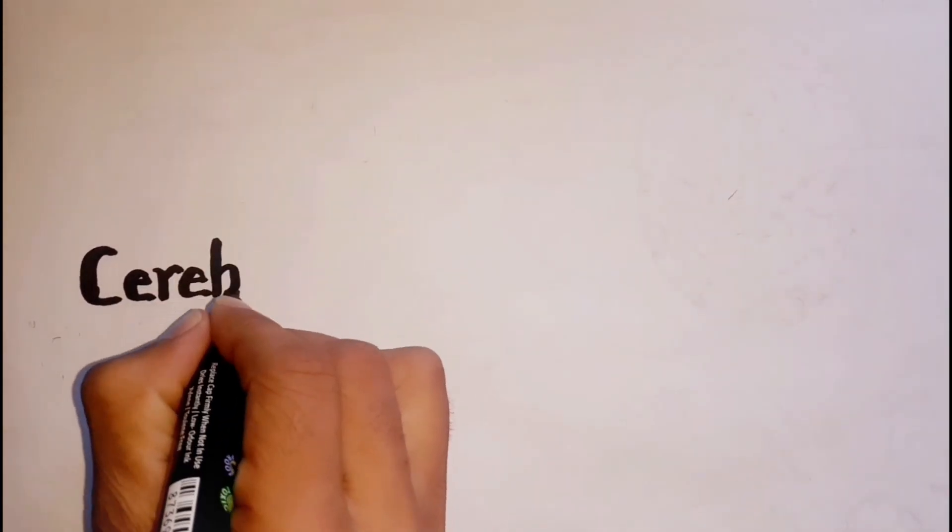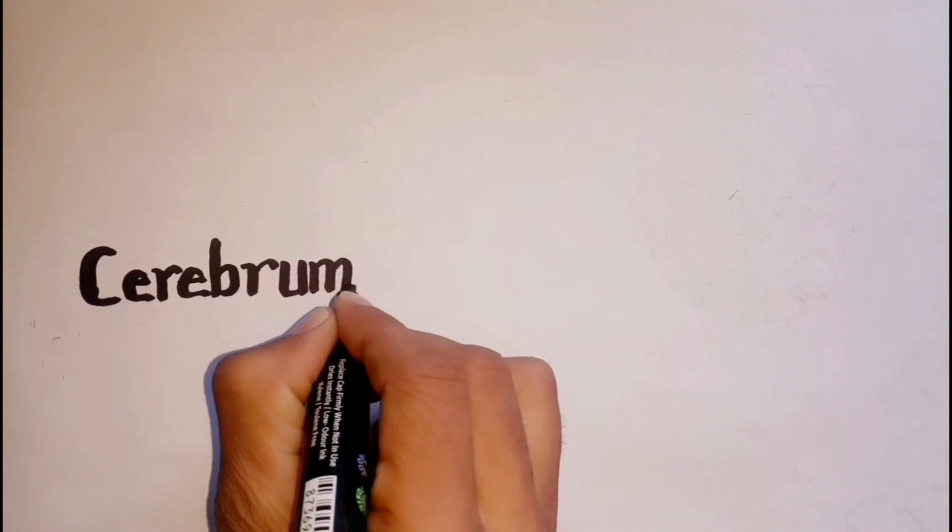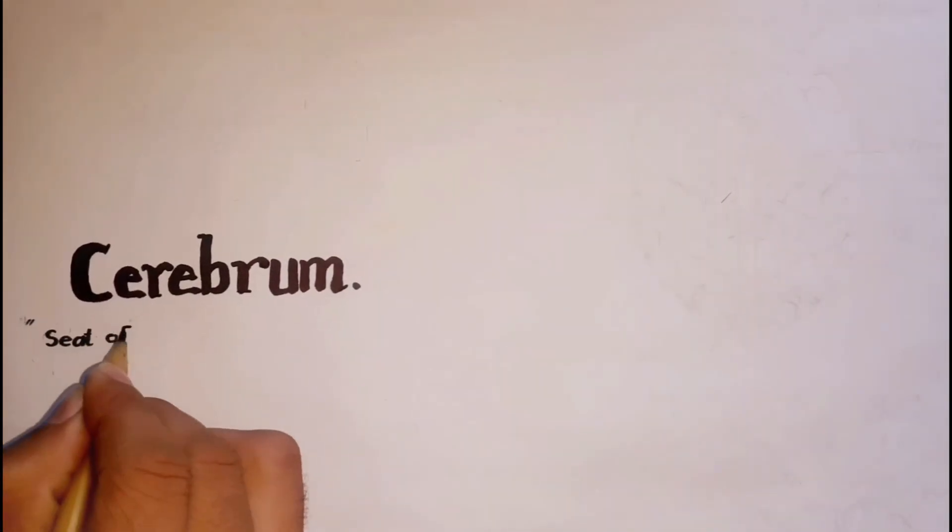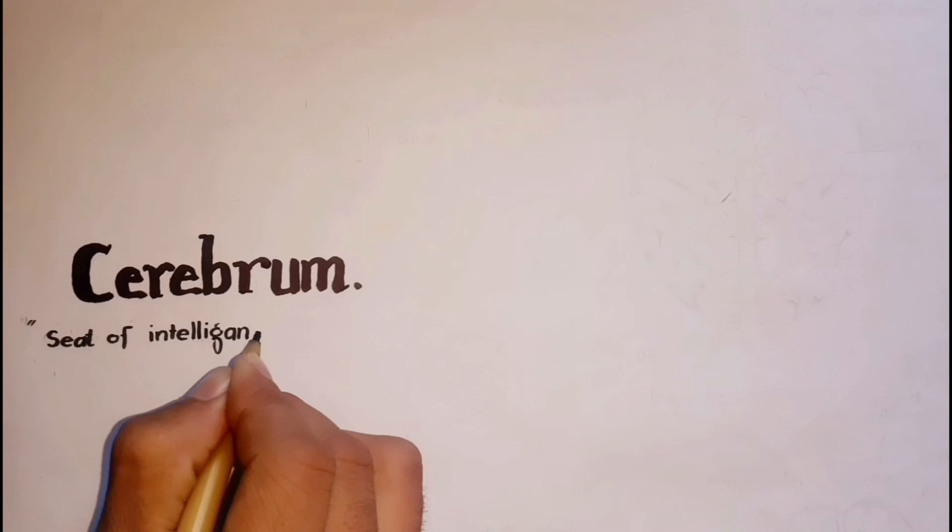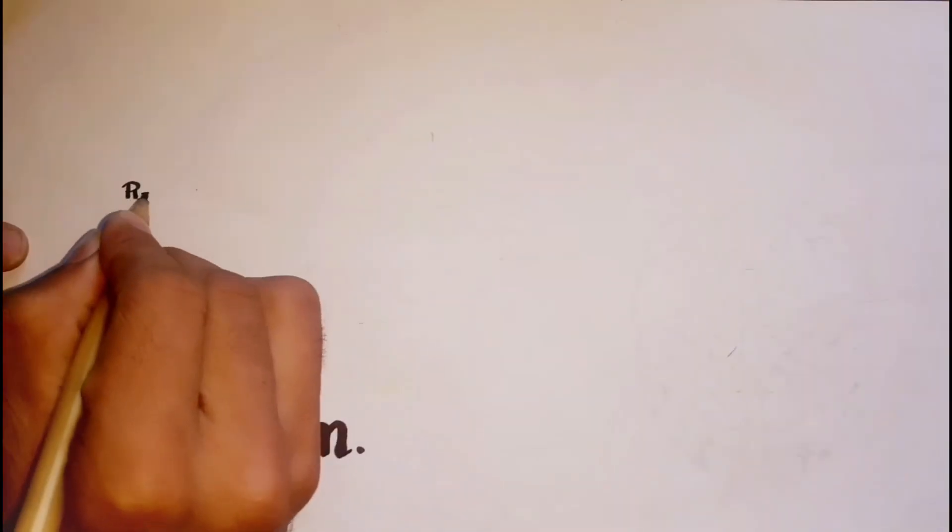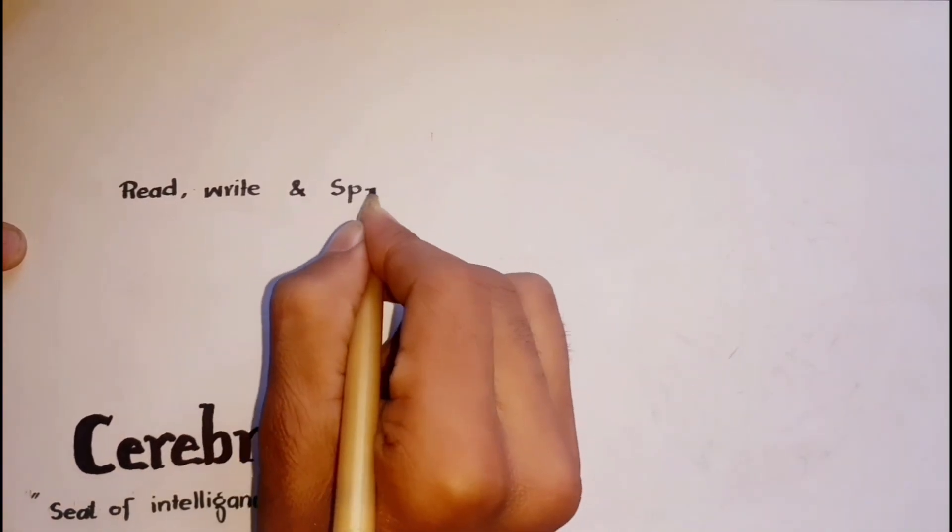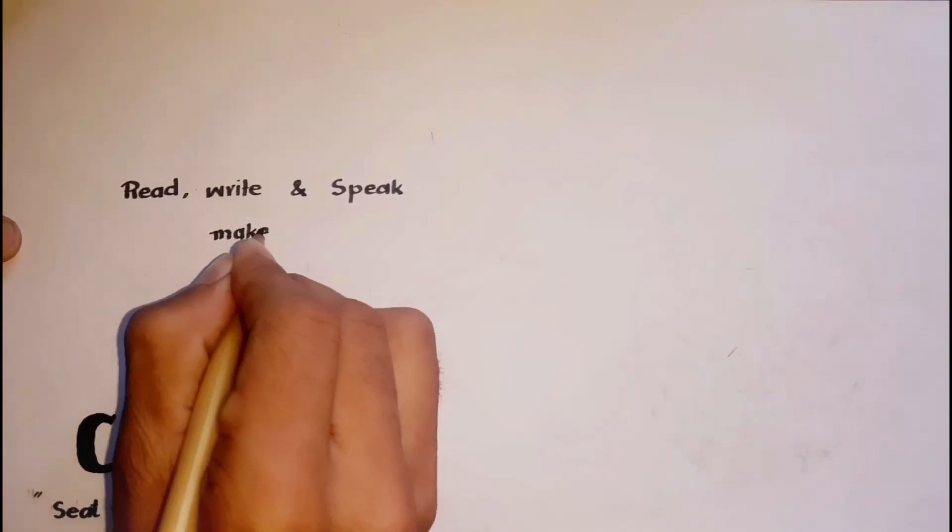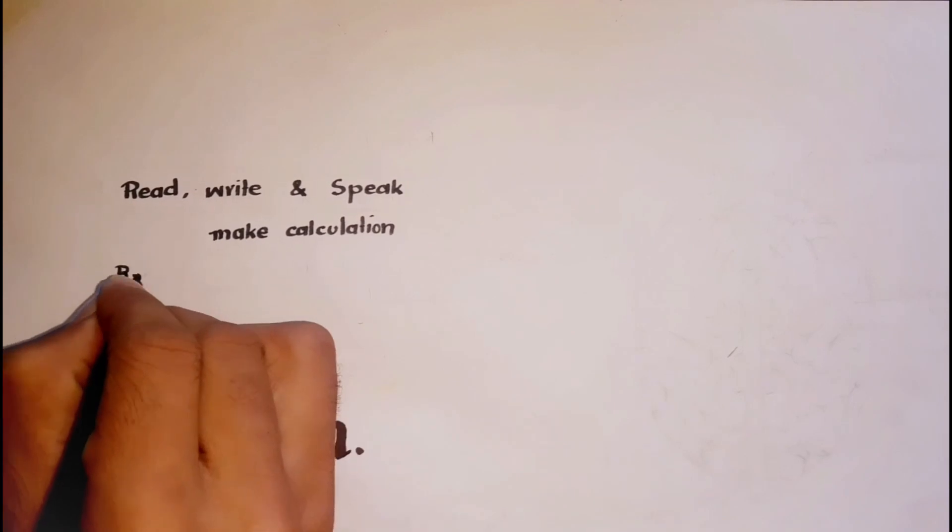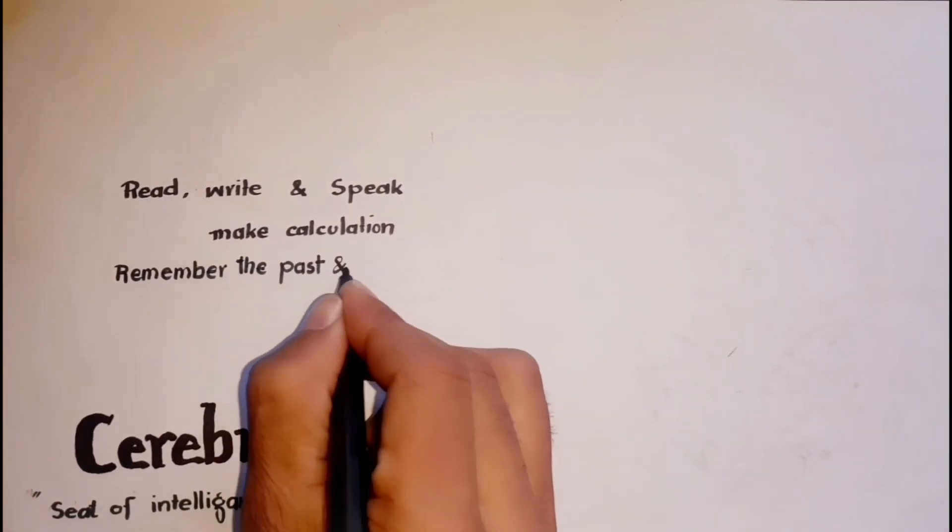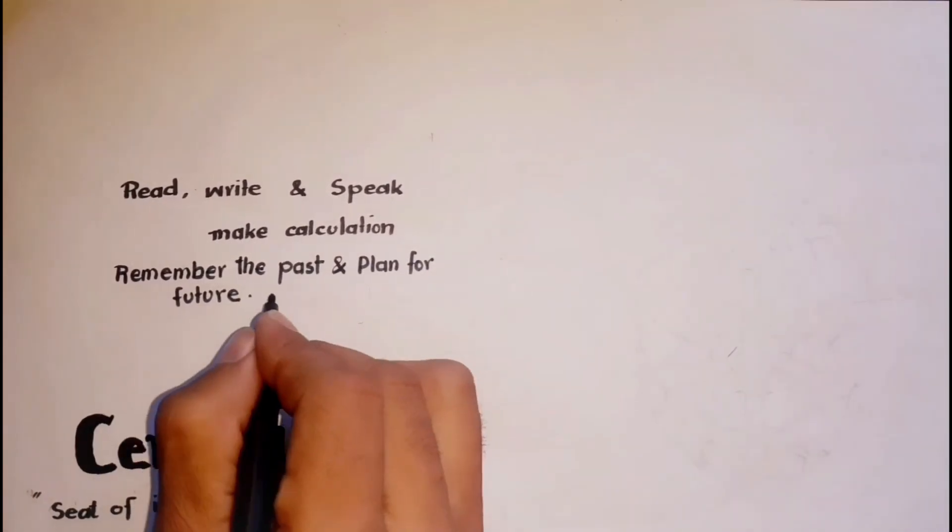The cerebrum is the largest part of our brain and is the seat of intelligence. It provides us with the ability to read, write and speak, to make calculations, and to remember the past, plan for the future, and imagine things.